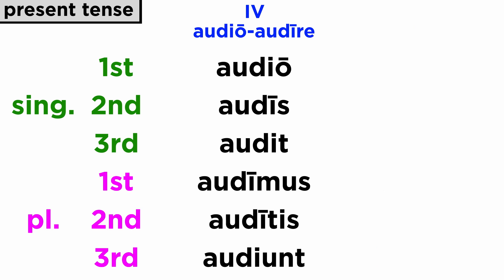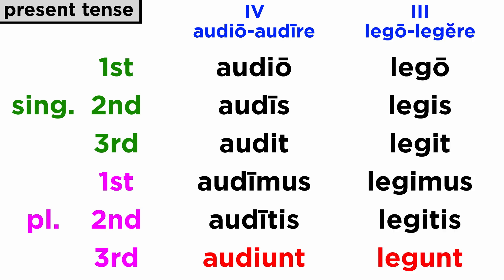Let's give audire a closer look. In the fourth conjugation the personal endings are added to the present stem, so first of all make sure you identify the present stem from the first principal part given to you by the dictionary. Then add the personal endings. But look now at the third person plural — one would expect audint. This form ultimately modifies into audiunt, just like the third conjugation: legunt.